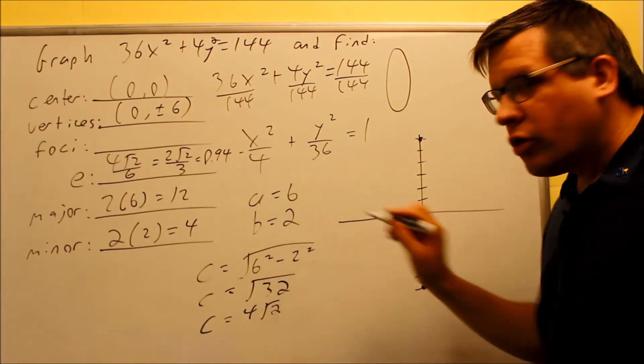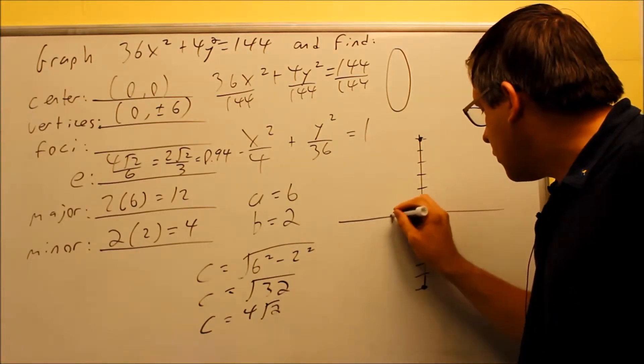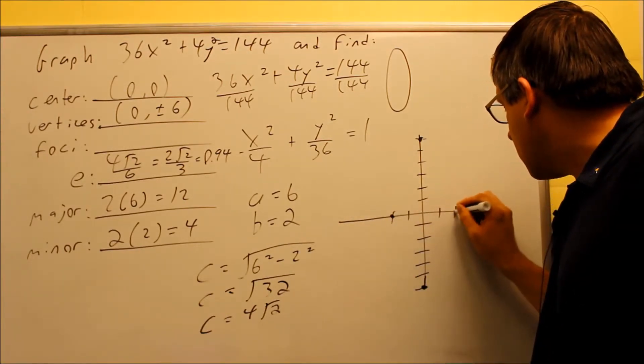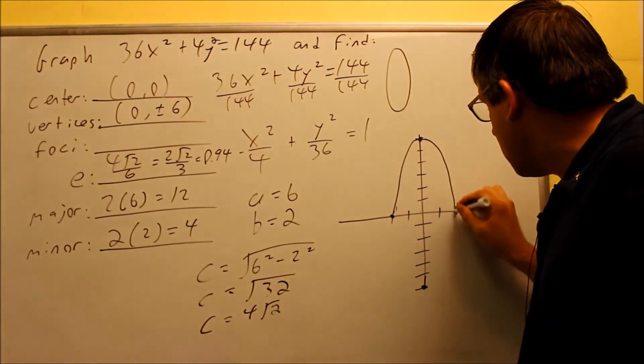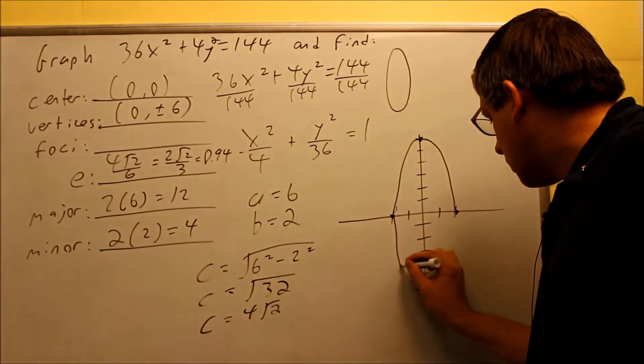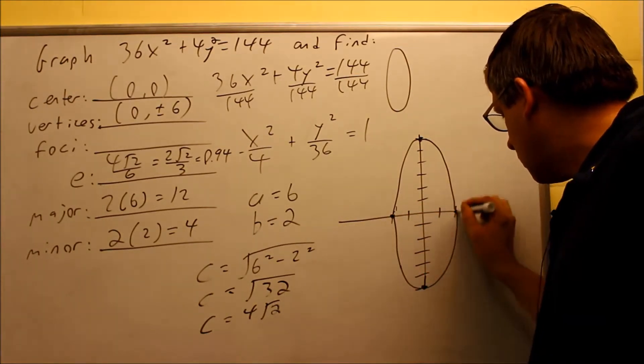We're going to go left and right with our b value of 2, we go this way, and we go this way. So now we have those, which means the graph itself is going to look like this. So we have that.